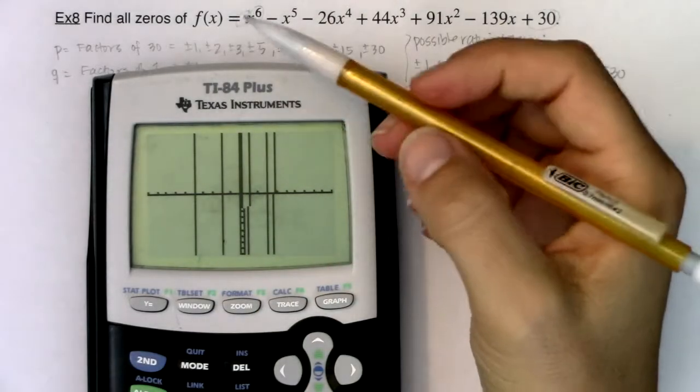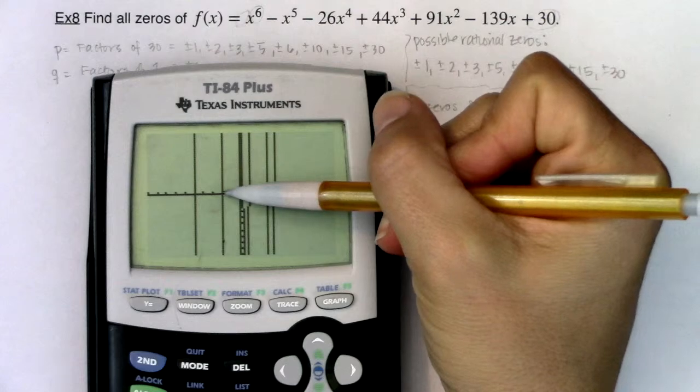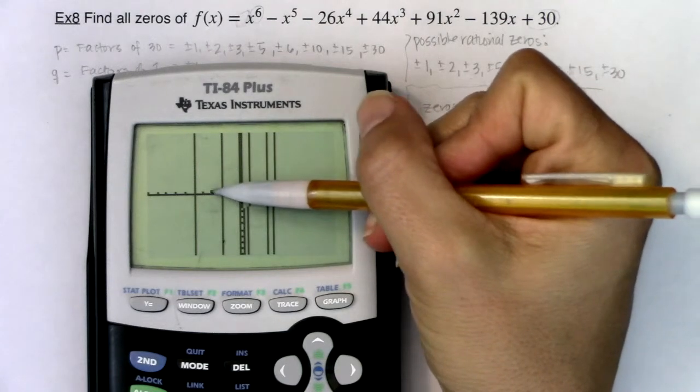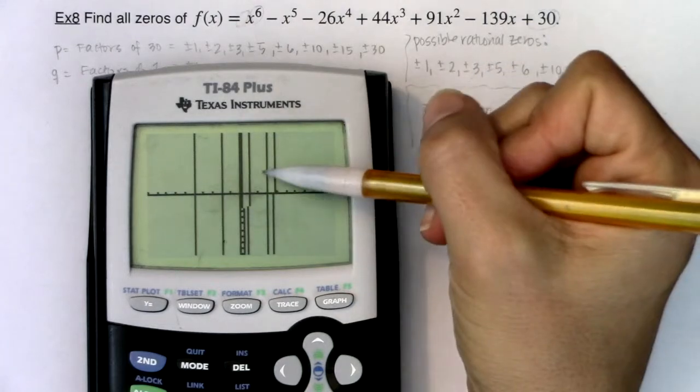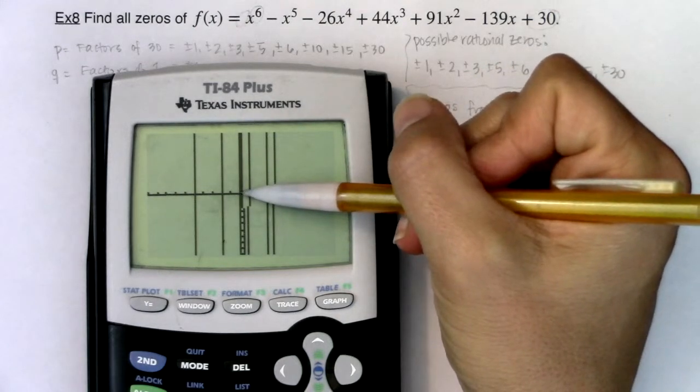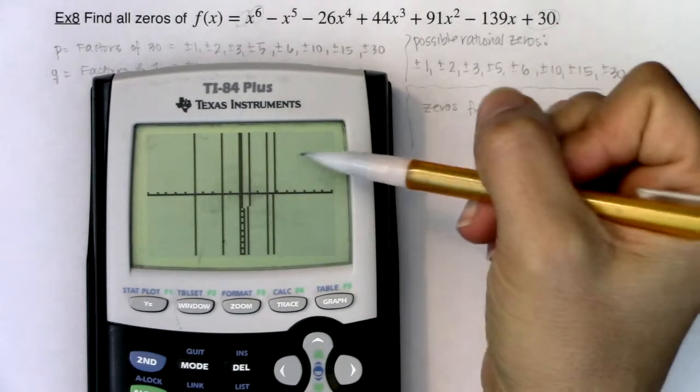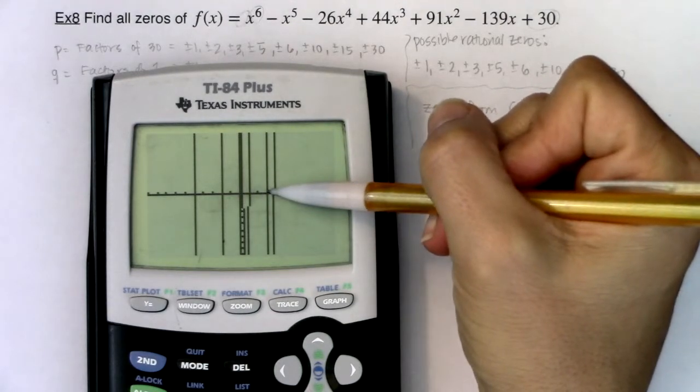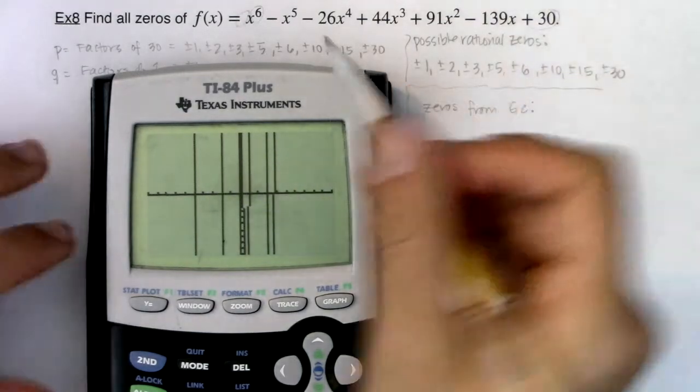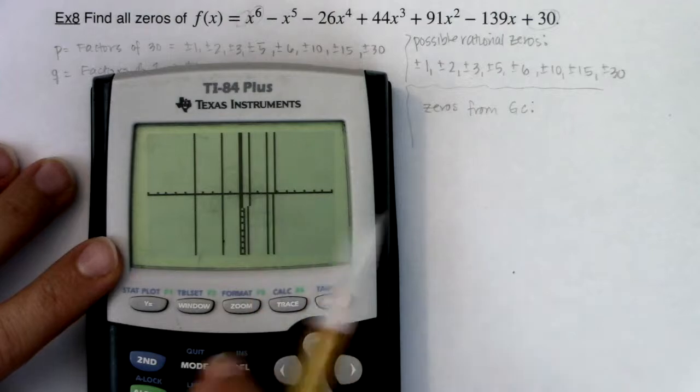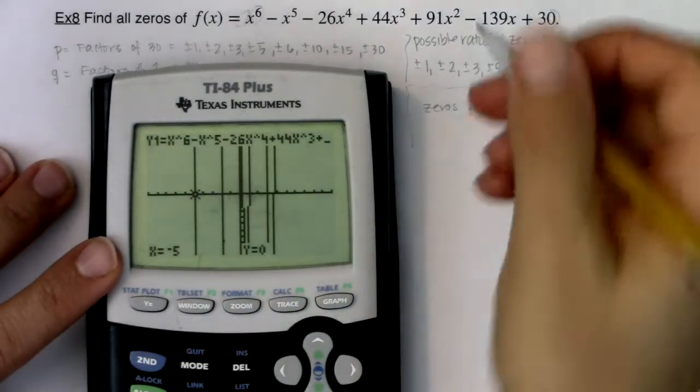That looked like maybe it was all six of them. So let me look for ones that look like whole numbers. It looks like negative two, three, four, five. I think negative five and negative two seem like pretty good possibilities. That looks like x equals one. Let me try negative five. Second calc one, plug in negative five. That is a zero. I'm going to keep that one.